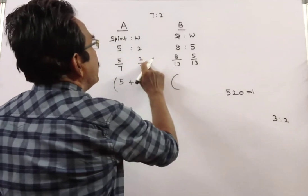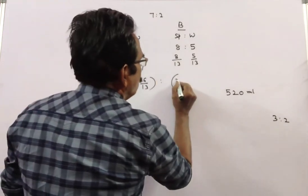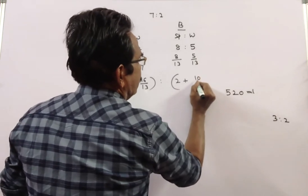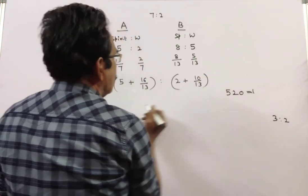Let us see water. 2 by 7 into 7 is 2, plus 2 into 5 by 13 is 10 by 13.